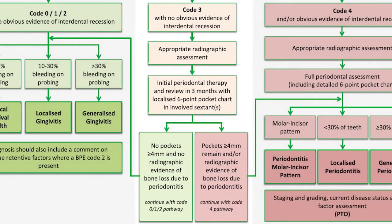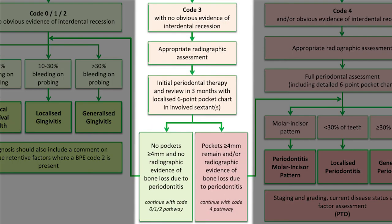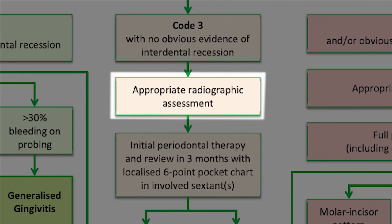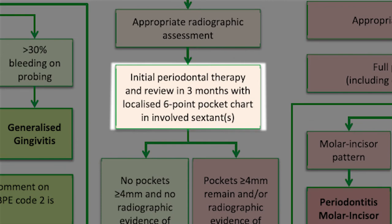Let's start with code 3s only, no code 4s. You start by taking radiographs in the sextants with scores of 3 to assess if there's any bone loss. You will then do an initial periodontal therapy, which is a combination of good supragingival scaling and oral hygiene instructions, and then wait 8-12 weeks for the inflammation to cool down.